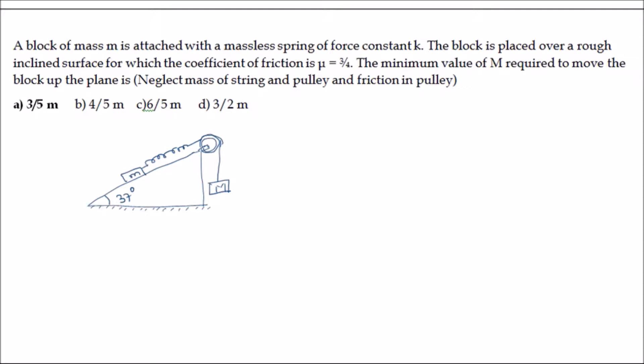The minimum value of M required to move the block up the plane is to be found. Neglect the mass of the string and pulley, and also the friction in the pulley. The angle theta is given as 37 degrees — the standard angle — and we know that tan 37° = 3/4, so sine 37° = 3/5 and cos 37° = 4/5.